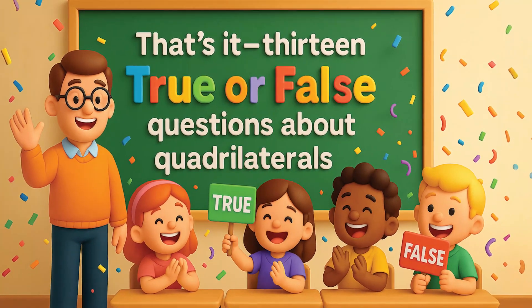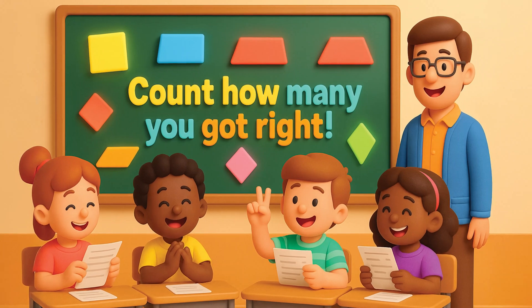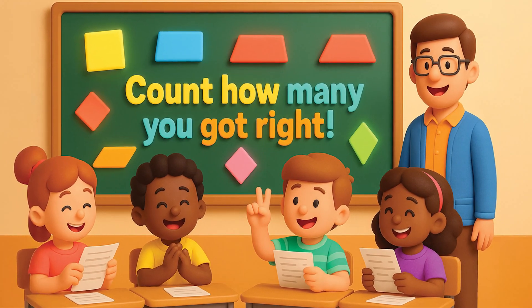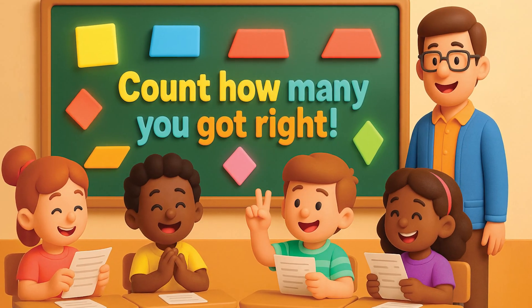That's it. Thirteen true or false questions about quadrilaterals. Count how many you got right. And remember, squares, rectangles, trapezoids, parallelograms, rhombuses, and kites are all part of the quadrilateral family.